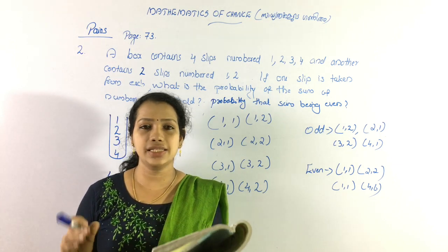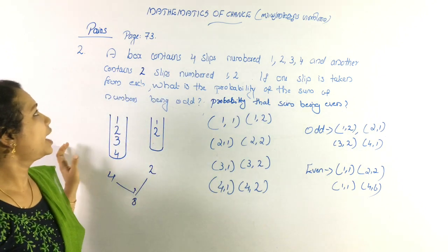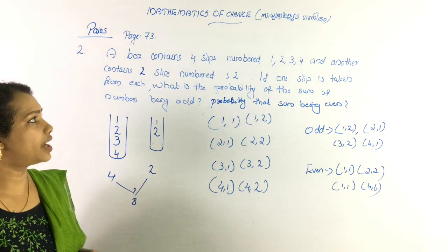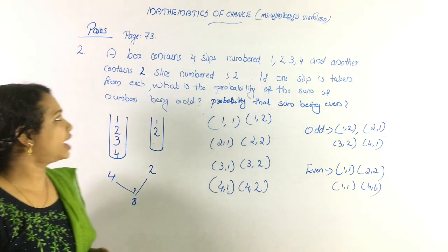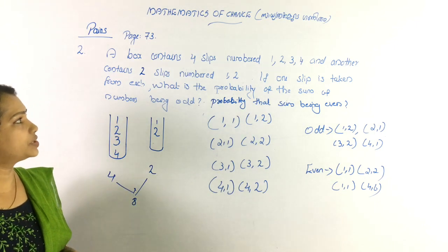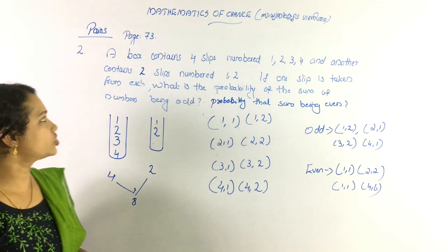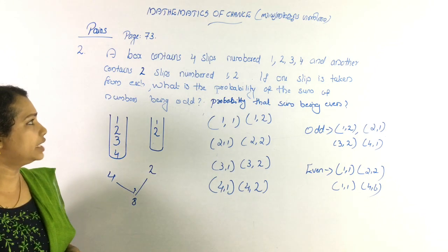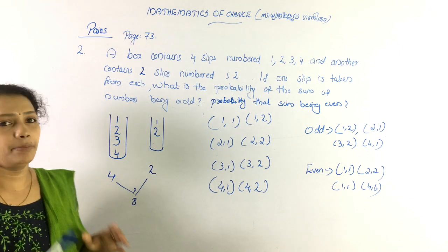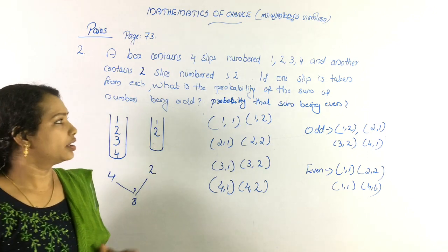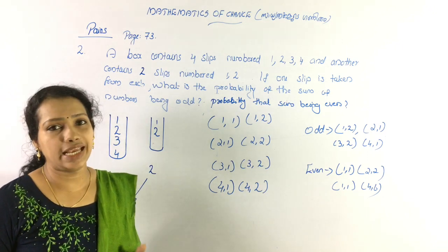Question number 2. A box contains four slips numbered 1, 2, 3, 4 and another box contains two slips numbered 1 and 2. If one slip is taken from each, what is the probability of the sum of the numbers being odd?